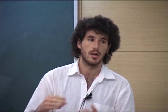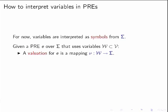A valuation gives different interpretations to the variables — mapping them to symbols of the alphabet. For now, we assume variables are interpreted as symbols from sigma; extensions will come later. For example, given the expression 0 x* 1 x y*, a valuation sending x to 0 and y to 1 yields the expression 0 0* 1 0 1*.